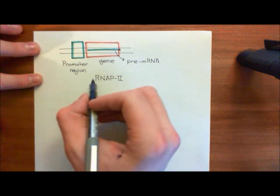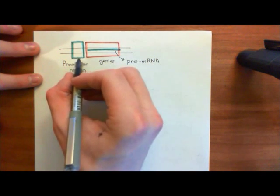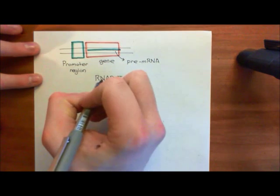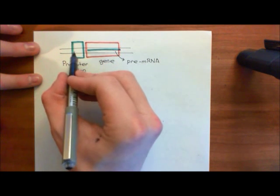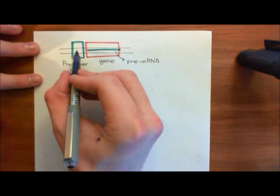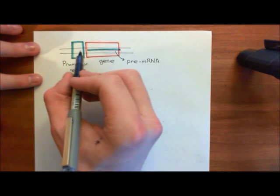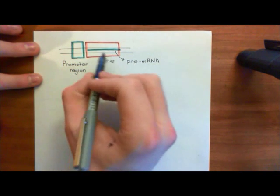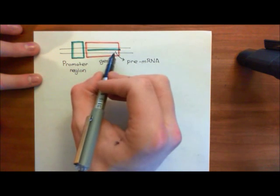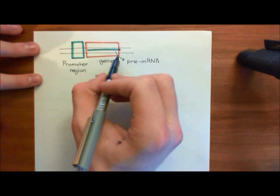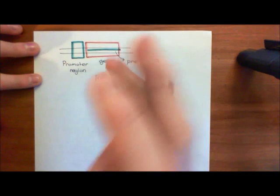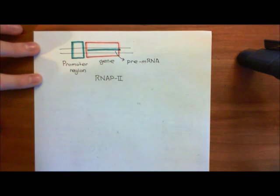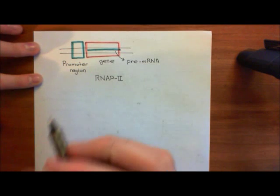On the other hand, if the promoter region has a really low affinity for binding to RNA polymerase 2, then RNA polymerase 2 will hardly ever bind here. It will hardly ever work its way along the gene, and you'll get hardly any pre-mRNAs produced for the downstream gene, and therefore you'll get hardly any protein being produced. That's how promoter regions control the expression of downstream genes.